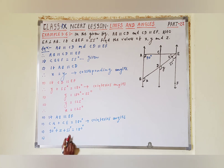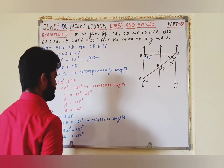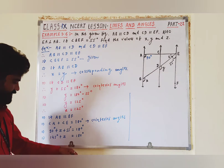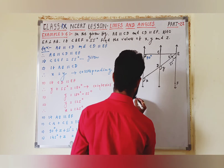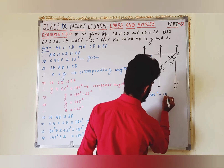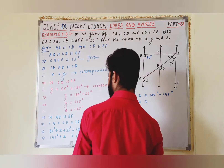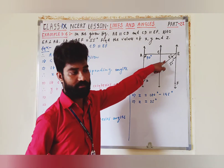अब इसकी value find out करो। 90 degree + 55 degree = 145 degree। तो 145 degree + Z = 180 degree। इसलिए Z = 180 degree − 145 degree = 35 degree। तो Z की value हमें 35 degree मिली।